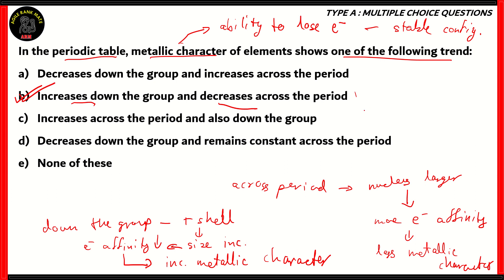The correct option would be option B. Option A would be true for non-metallic character, but we're looking at metallic ones. Increasing across the period and down the group describes no such character for elements. Option D — decreases down the group and remains constant across the period — is also incorrect. None of the above is also incorrect, because we know option B is the right one. Metallic character refers to the ability of losing electrons. Going down the group, the addition of shell makes the size larger, so it's easier for the element to lose electrons. Moving across a period, the nucleus gets larger, meaning more electron affinity and decreased metallic character.